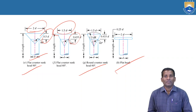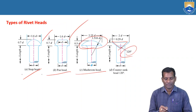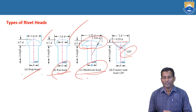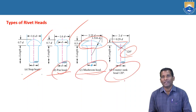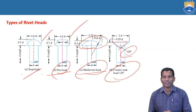All these are types of rivet heads: flat head, pan head, mushroom shape head, and counter sunk head. All these types of rivet heads differ depending on the shape of the head — the geometry of the head only — and based on that head shape, the dimensions are also defined accordingly.